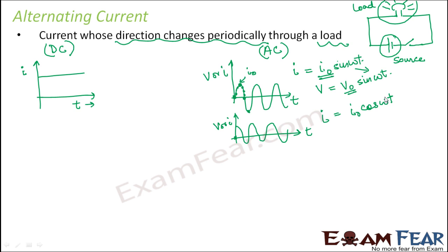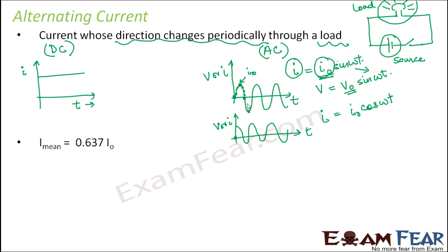When we talk about alternating current, we deal with many different types of current values: instantaneous current, peak current, and mean value of alternating current. Since the value of current is different at every instant, we ask: what is the average value over one complete cycle? The mean value over one complete cycle is always zero, because the positive and negative halves cancel out. Therefore, I_mean is redefined as the average over half a cycle instead of a complete cycle.